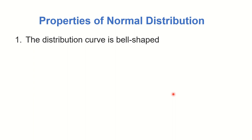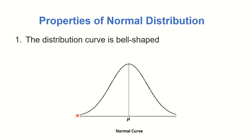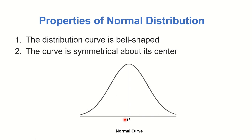The first property of a normal distribution is that the distribution curve is bell-shaped. The second property is that the curve is symmetrical about its center. If we draw a center line, the area to the left side of the curve must be equal to the area to the right side of the curve. Whatever is the slope to the left side must be the same as the right side because they are symmetrical — they mirror each other.